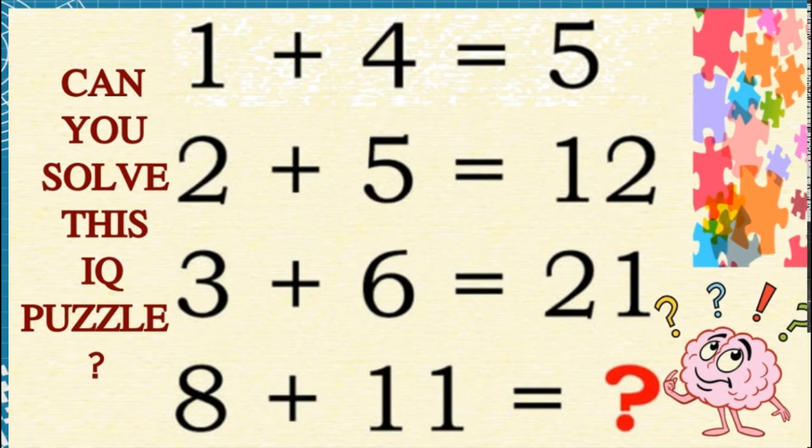2 plus 5 equals 12. Wait - 2 plus 5 is equal to 7. How does it become 12?